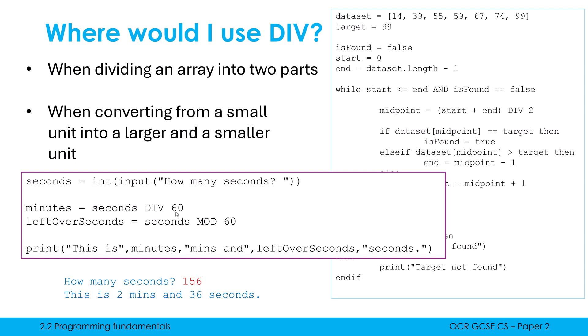So we use DIV to find out how many minutes are in this period of seconds. And then I use MOD to find out what is my excess, what is left over when I do this division. So MOD gives us 36, DIV would give us, in this case, 2. So we do use DIV and MOD quite a lot. Just don't forget that MOD is our remainder. It's not the fractional part.